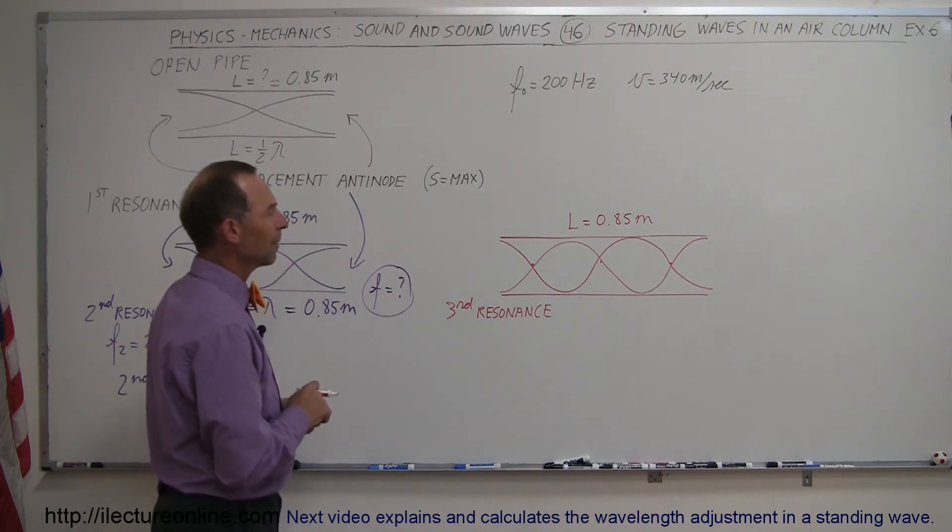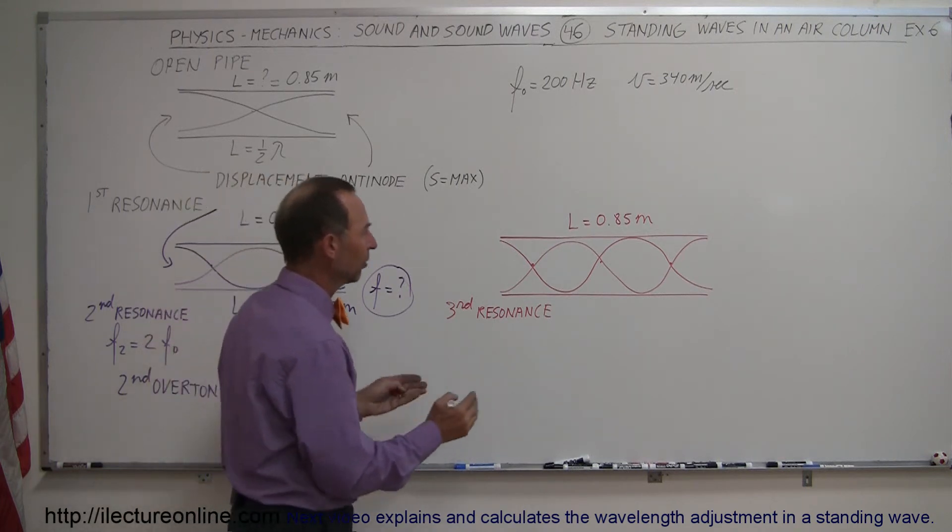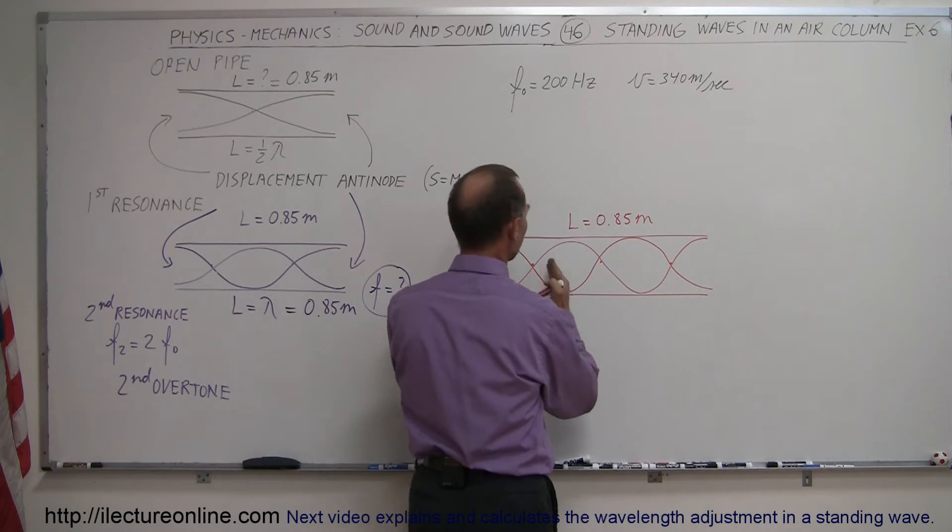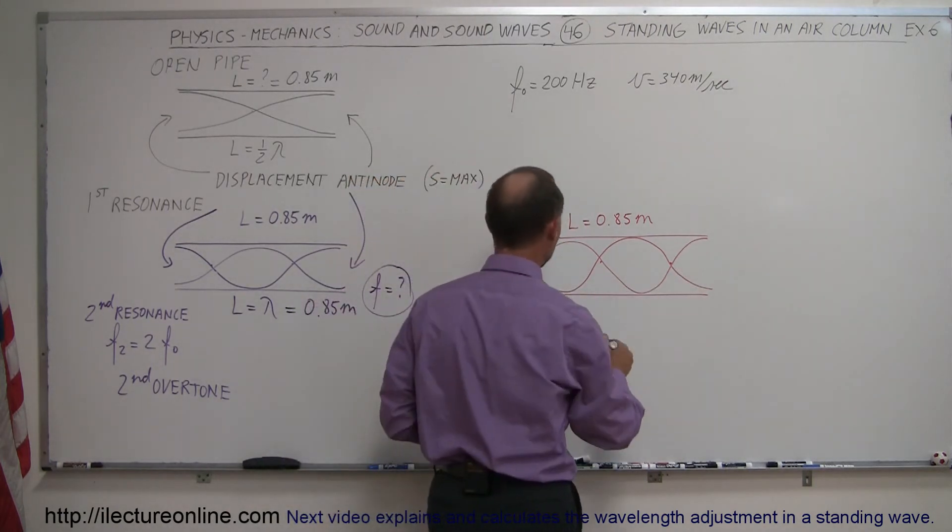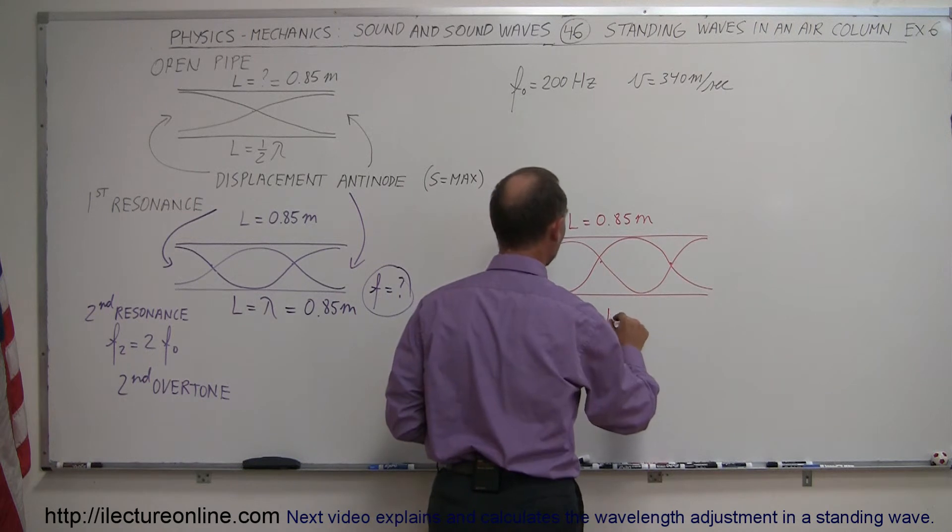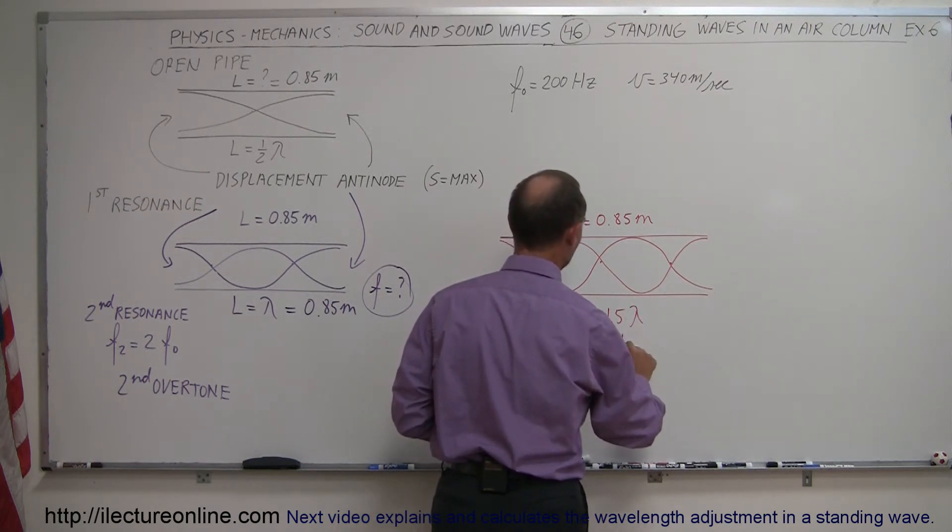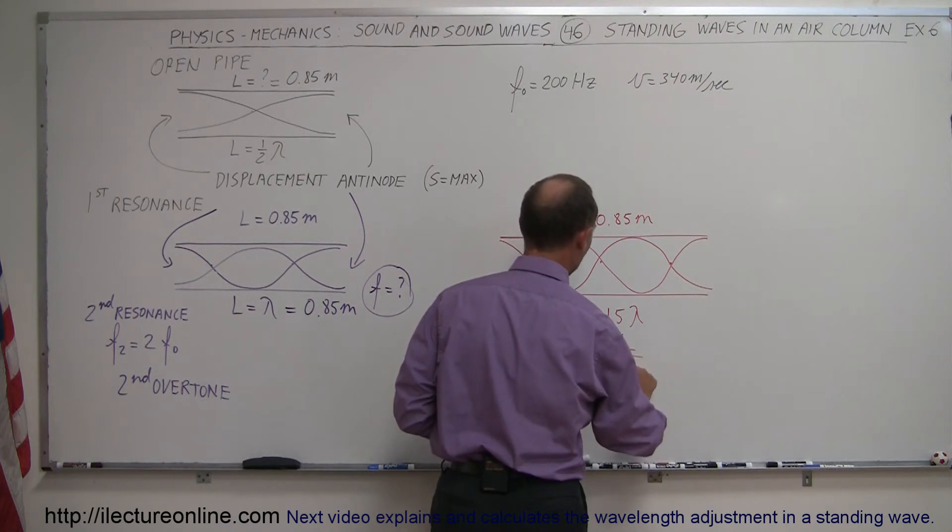All right, how many wavelengths is that? Well, this is a full wavelength. That's a quarter. That's a quarter. That looks like a half a wavelength added to a full wavelength, or the length of the pipe is equal to 1.5 lambda, or lambda, therefore, is equal to the length of the pipe divided by 1.5.